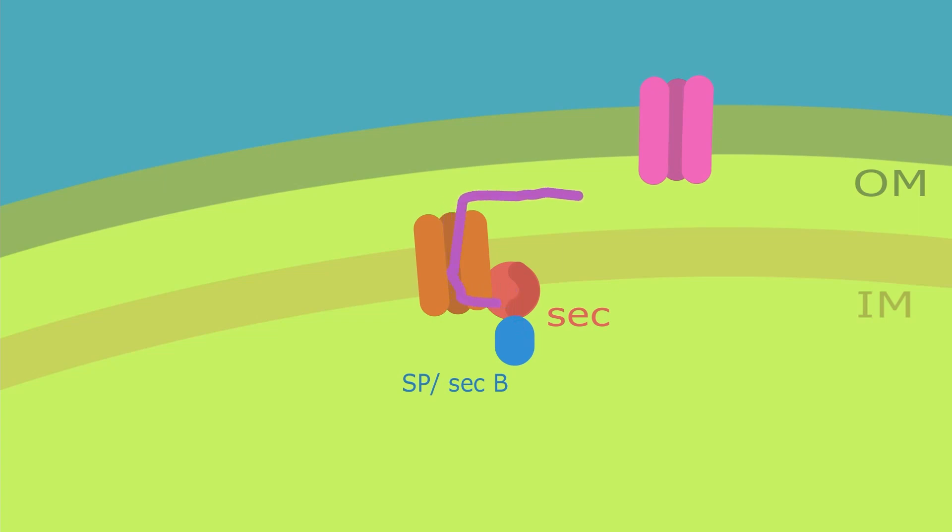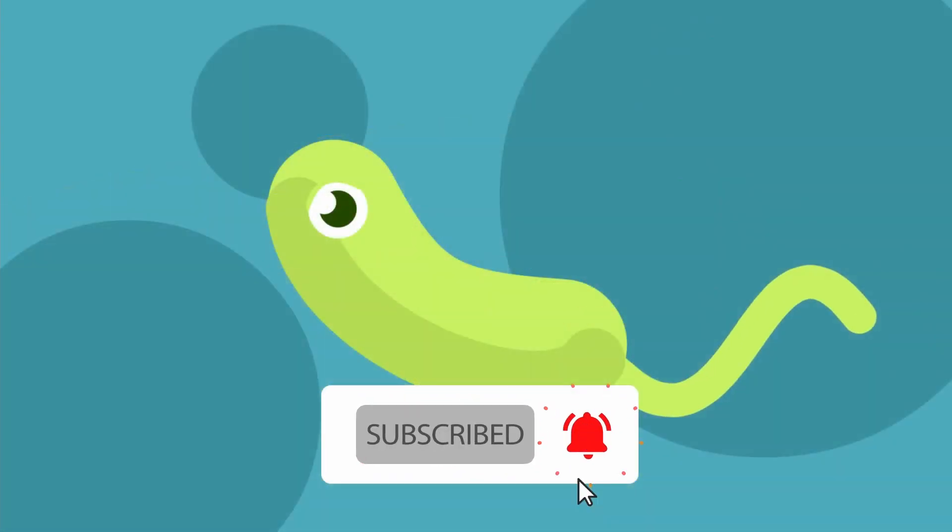And from here it is believed that the protein is secreted through a channel referred to as the PulD channel and it then enters the extracellular space and can do its function.